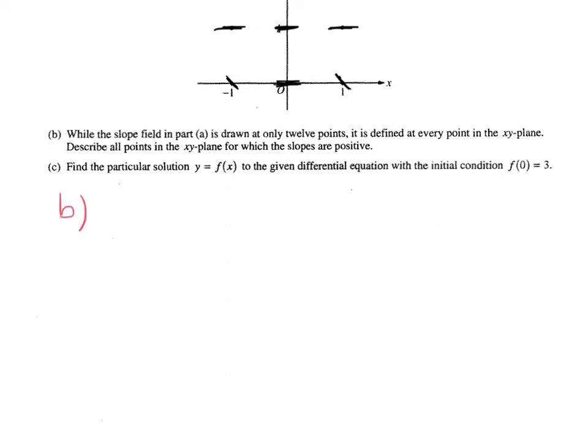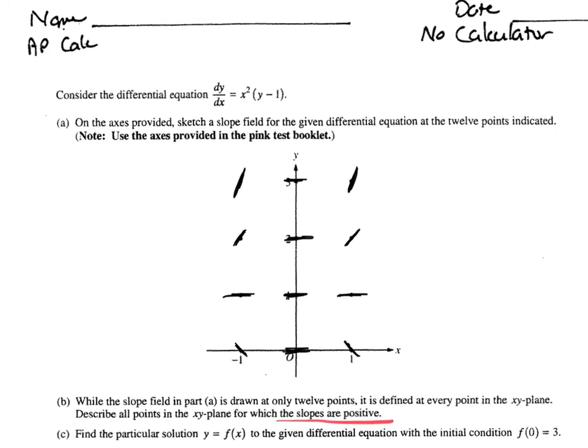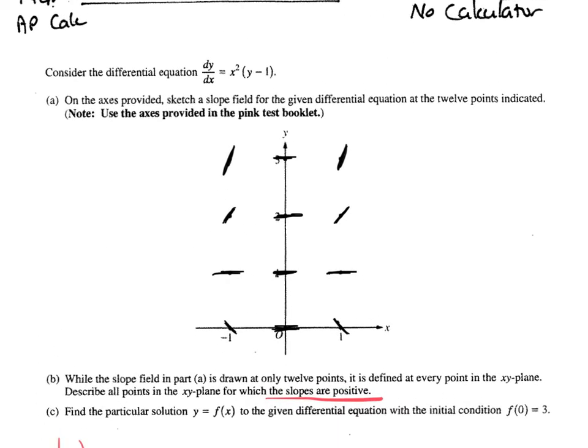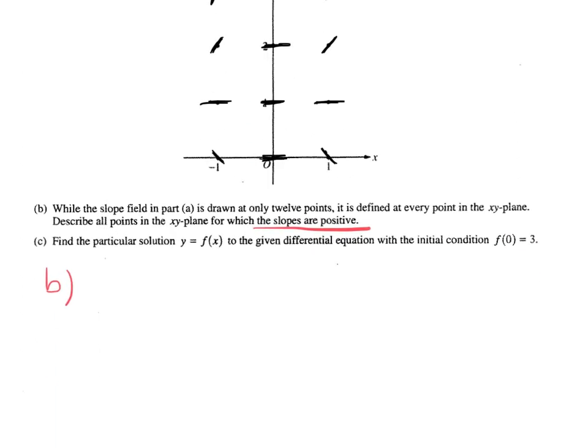We have to describe all points for which the slopes are positive. Okay, so the slopes are positive whenever y is greater than 1. You can kind of see that here, that this will be positive when y is greater than 1.